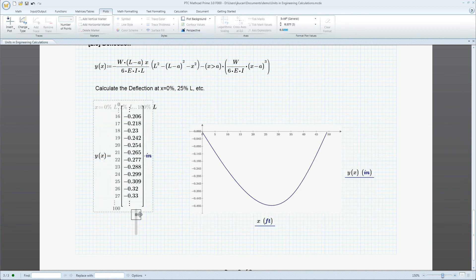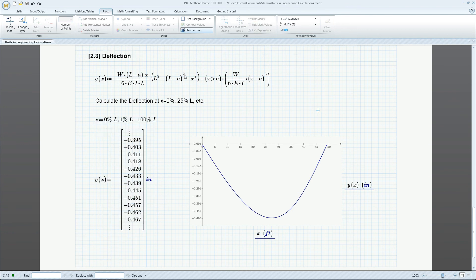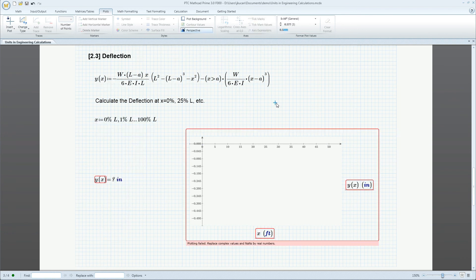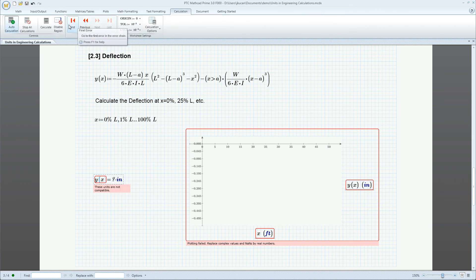PTC Mathcad Units Intelligence also checks for errors. Instead of squaring a term, if it is mistakenly cubed, error flags immediately show the problem. You can trace that error to the source, which points out the faulty term.